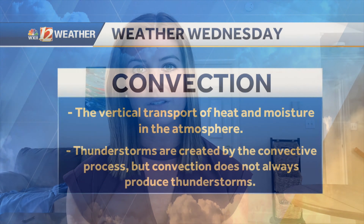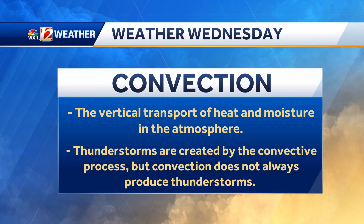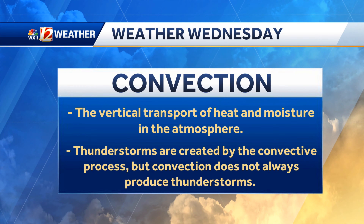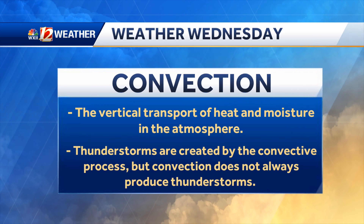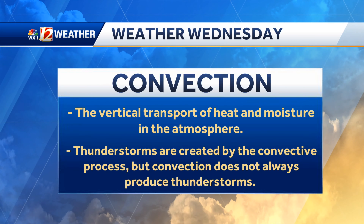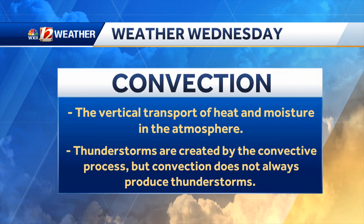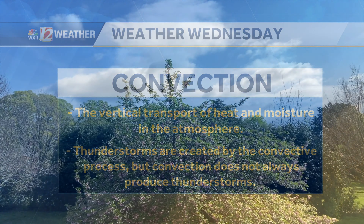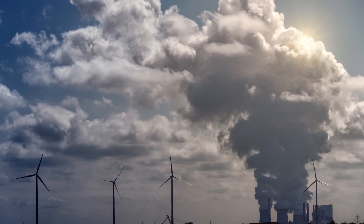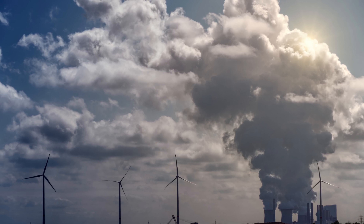Convection is typically what is used to describe the process that produces thunderstorms. Convection is the vertical transport of heat and moisture in the atmosphere — hot air rises, cold air sinks. During this process, unbalanced heating gets redistributed, which creates air currents. This is why you can see some of those puffy cumulus clouds grow taller and taller. Some of those clouds become thunderstorms by this process, but convection does not always produce thunderstorms.